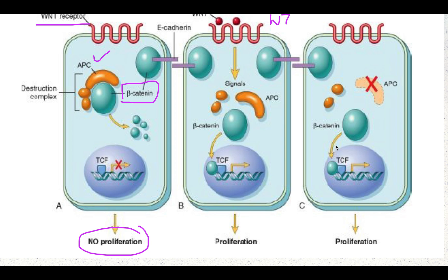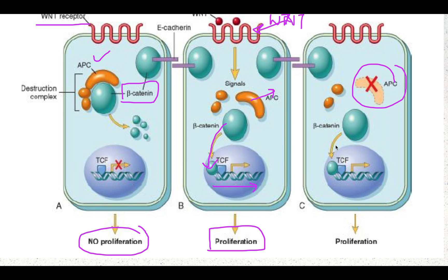When a growth signal (WNT) binds to its receptor, it signals the cell to release beta-catenin — APC moves away, beta-catenin enters the nucleus, transcription takes place, and the cell proliferates. When the APC gene is defective, beta-catenin is constitutively active and leads to uncontrolled proliferation of the cell, which is important in colon carcinomas.